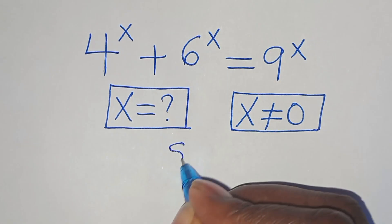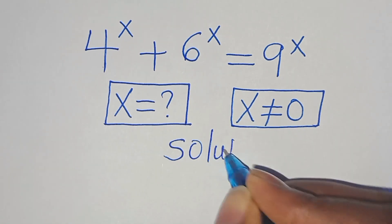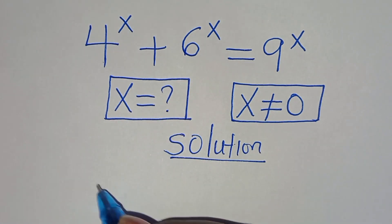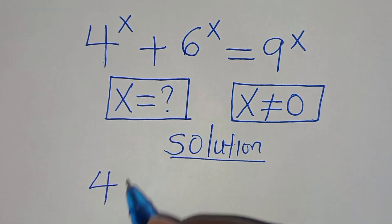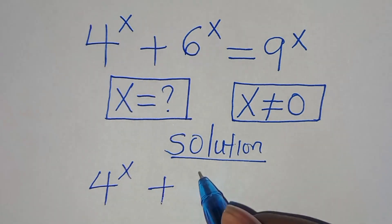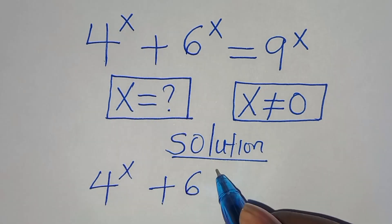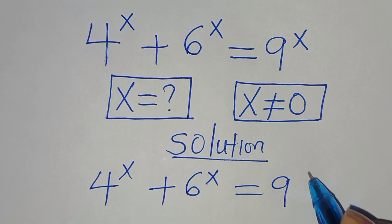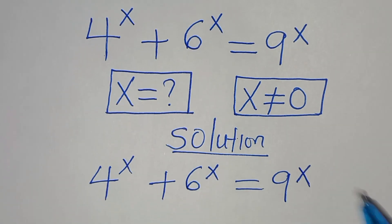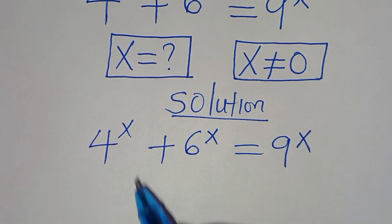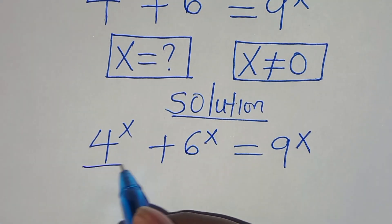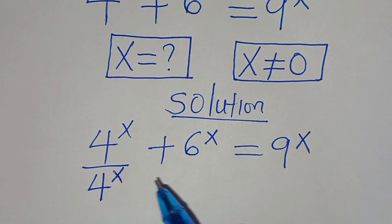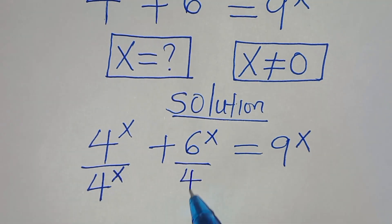Let's present the solution from here. We have 4 to the power of x plus 6 to the power of x, this is equal to 9 to the power of x. The first step is to divide both sides by 4 to the power of x.